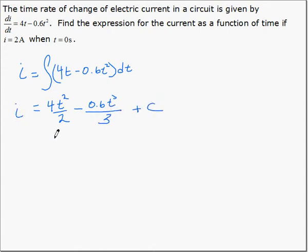So we have an expression for i, but it has a constant of integration. So we use our initial information, i is 2 and t is 0, to find this constant.